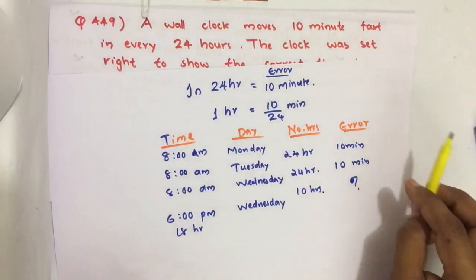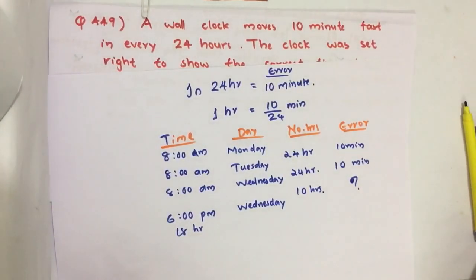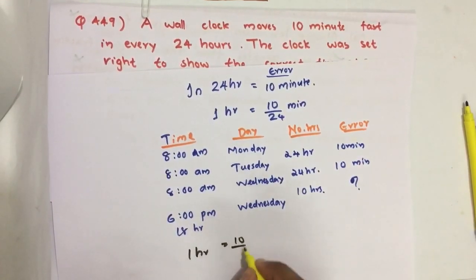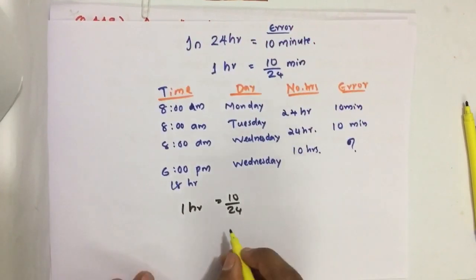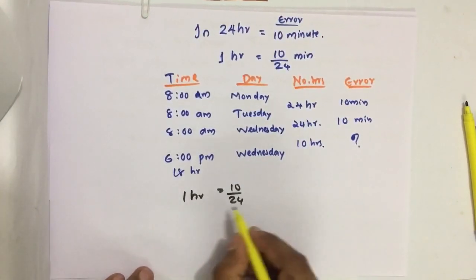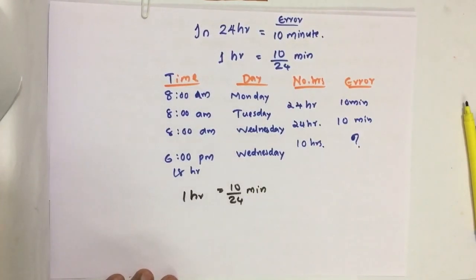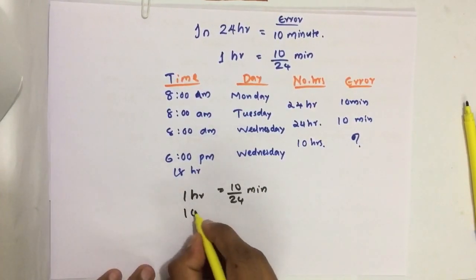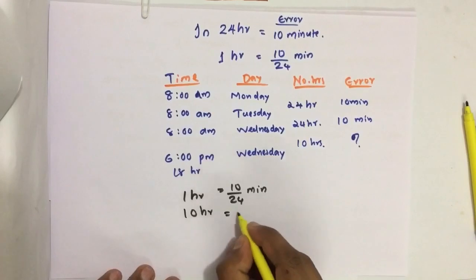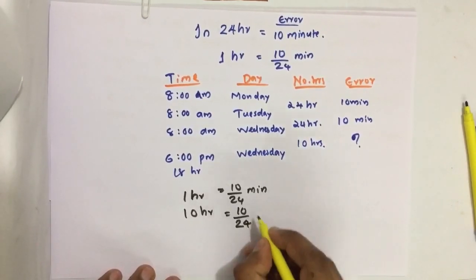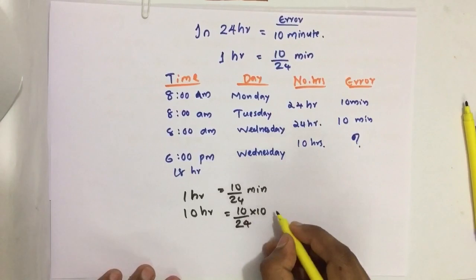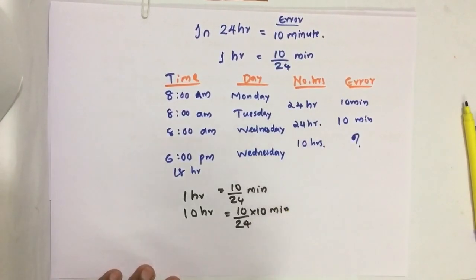From equation one, one hour has error of 10 by 24 minutes. So for 10 hours, 10 by 24 into 10 minute errors.